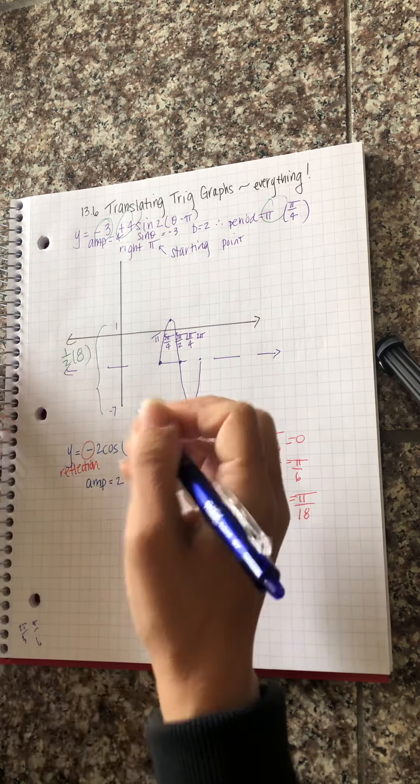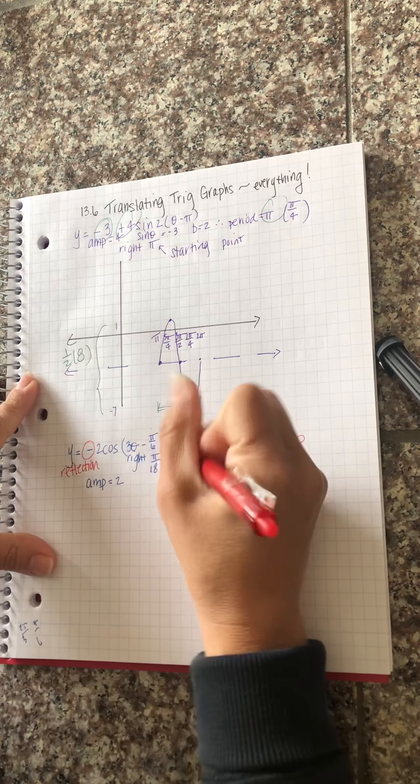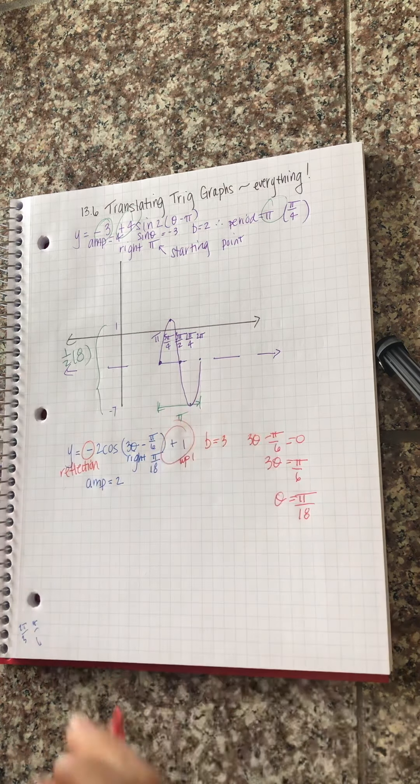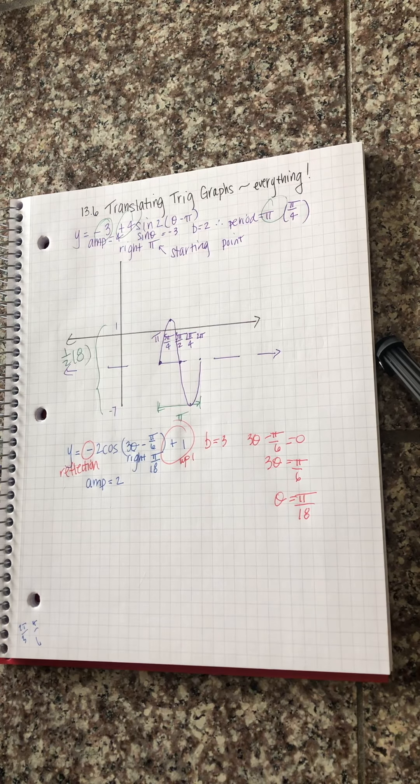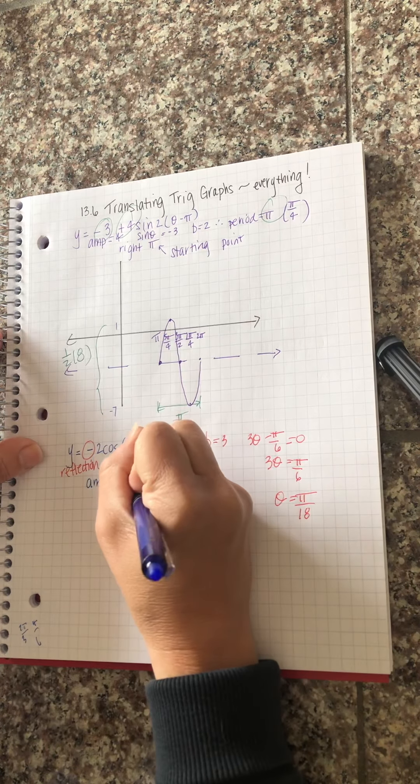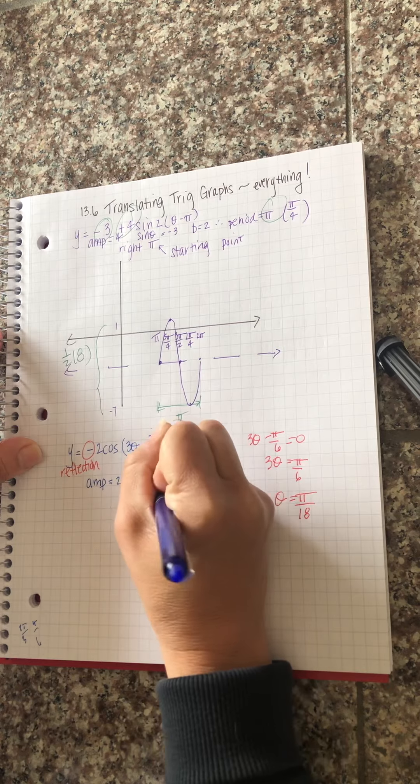Amplitude is positive. It's the absolute value. So my amplitude is 2 and this is going to tell me I'm going to go up one. So my sinusoidal, in this case cosine, is at one.